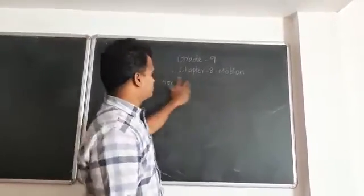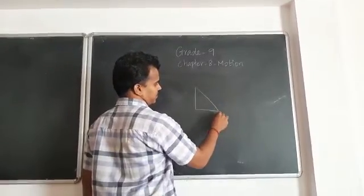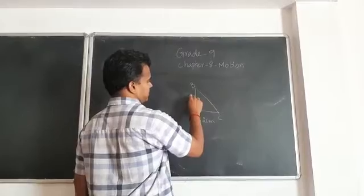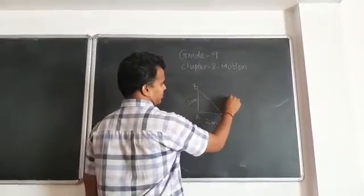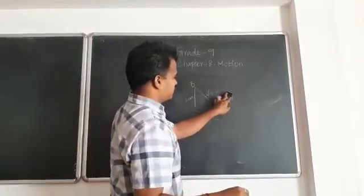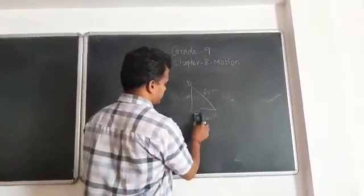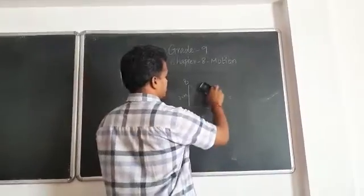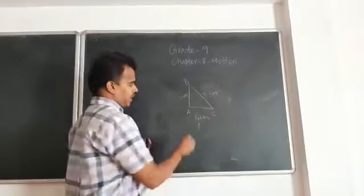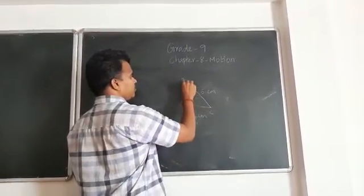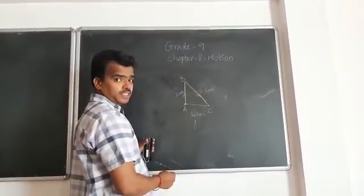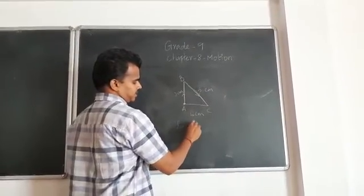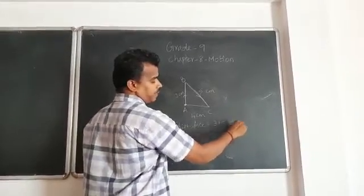For better understanding, consider a triangle example with points A, B, and C. Side AB is 3 centimeters and side BC is 4 centimeters. Using the Pythagorean theorem, AC equals the square root of 9 plus 16, which is 5 centimeters. An object moves from A to B (3 cm) and then B to C (5 cm — wait, BC = 4 cm, so distance covered is 3 plus 4 equals 7... rather, using the adjusted values: distance from A to B is 3 cm, B to C is 5 cm, so total distance is 8 centimeters.